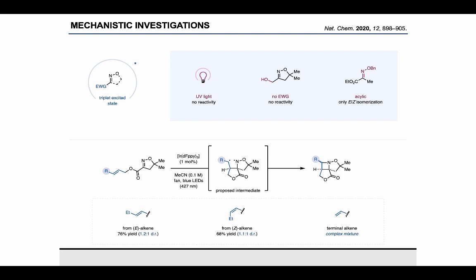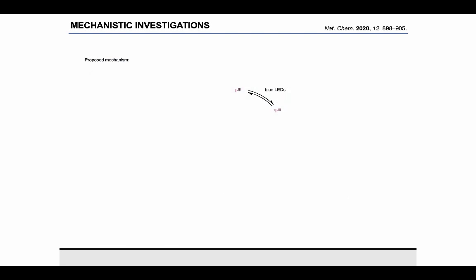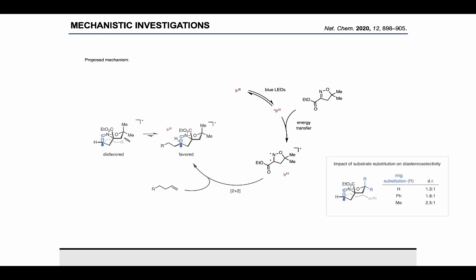Combining all these mechanistic experiments, we propose that upon excitation of the photocatalyst with visible light, energy transfer to the cyclic oxime can occur. The oxime can then undergo a stepwise cycloaddition process, and the intermediate of this process is this biradical shown here that can either adopt a conformation in which the alkene residue is placed away from the cyclic backbone of the substrate or underneath it. The conformation on the right hand side is favored as it avoids any steric interactions with the substrate backbone, which is supported by the impact that substrate substitution in this position has under the diastereoselectivity of the cycloaddition process.